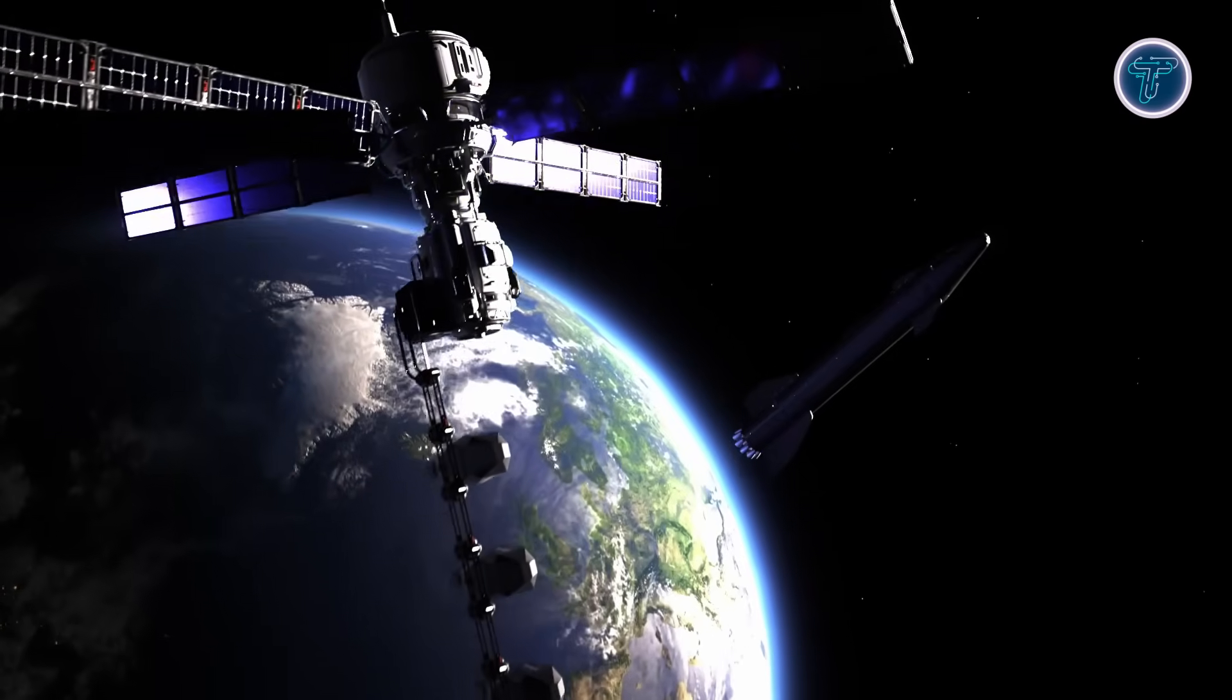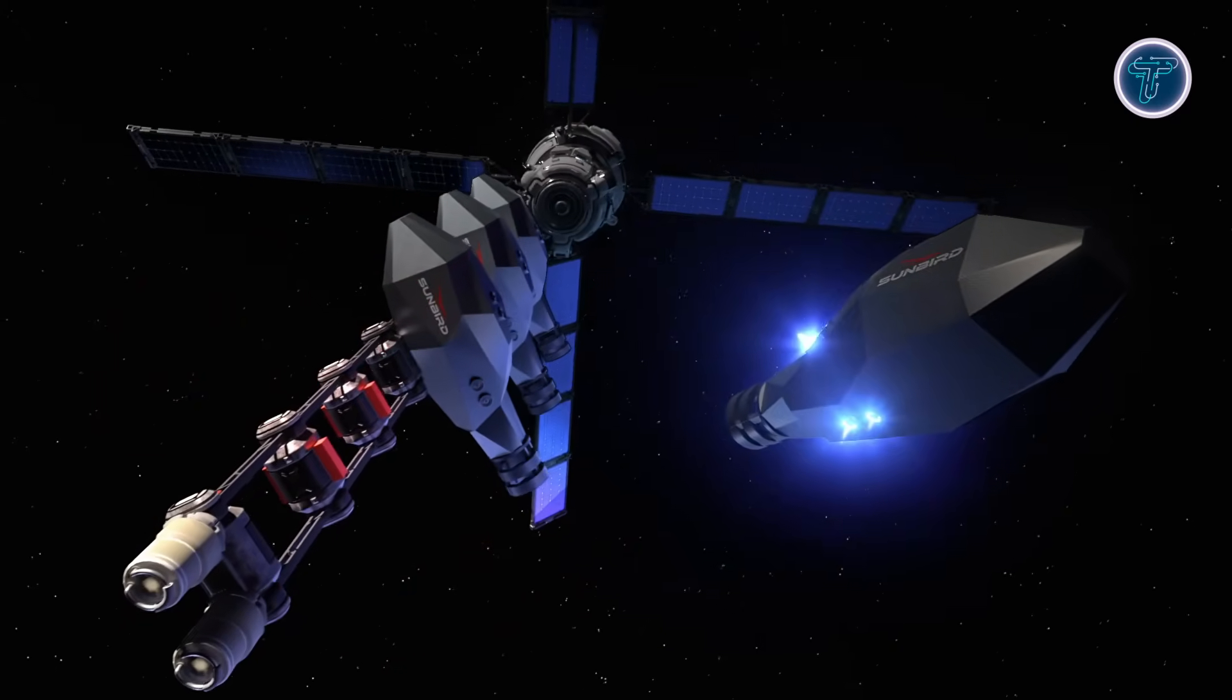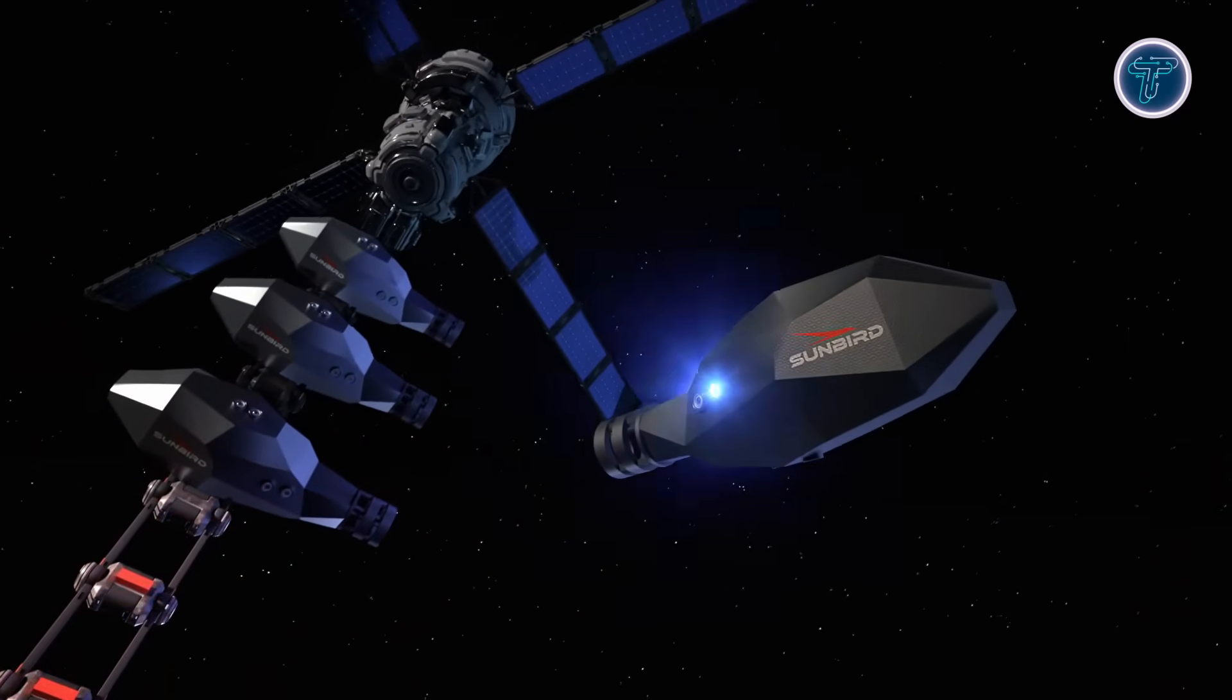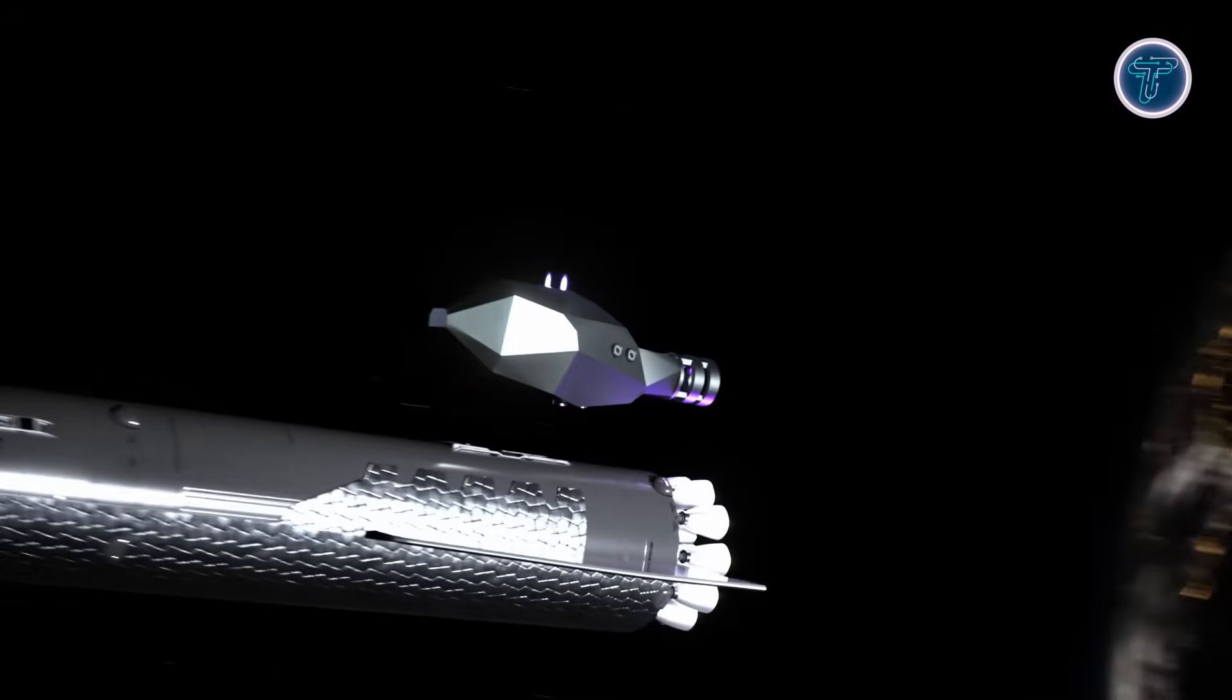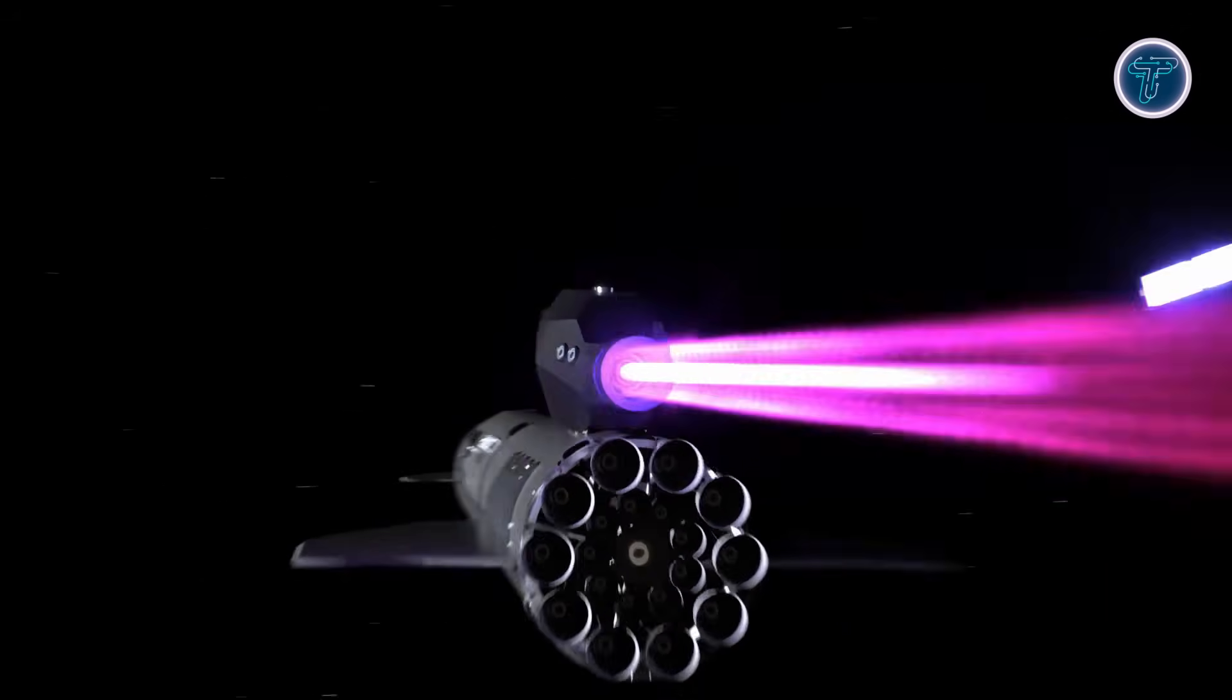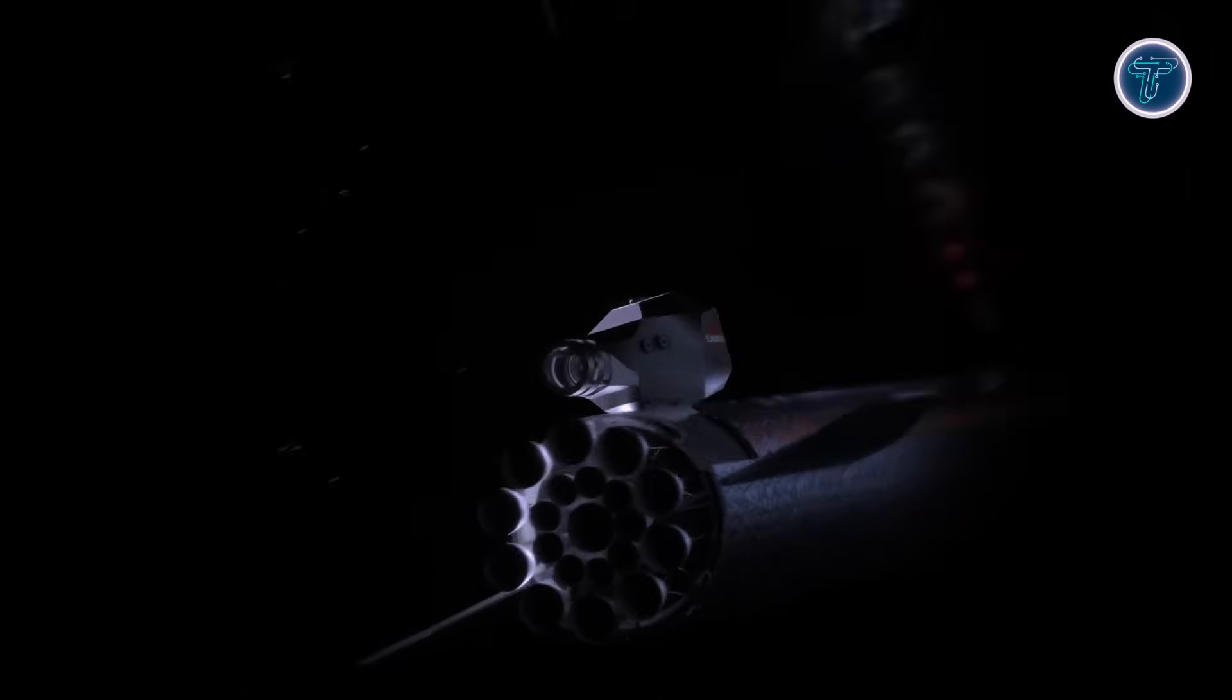The Sunbird features eight Moonranger Hall effect thrusters for maneuvering and is shielded with high-density metal composites to protect against radiation in deep space. Its exhaust velocity reaches up to 223 kilometers per second, offering unprecedented efficiency. This revolutionary design could open the door to rapid long-distance missions, marking a bold leap toward humanity's future in space exploration.